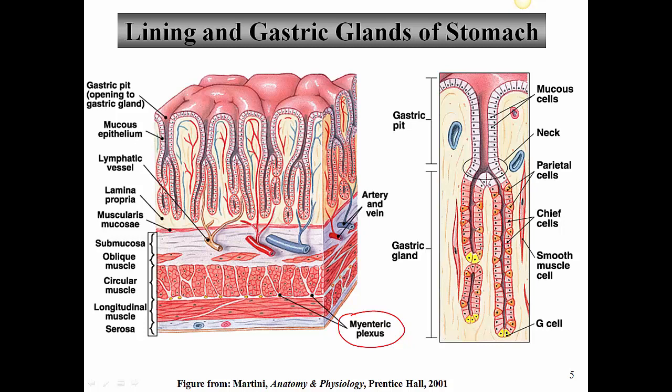The myenteric plexus is the one that controls peristalsis and segmentation. Segmentation is very important in the stomach — that's the grinding action we talked about. You'll notice blood vessels in the submucosal area, as well as some lymphatics. And in the lamina propria, as we talked about before, this is the loose areolar connective tissue just beneath the mucosal epithelium. The mucosal epithelium itself is composed of simple columnar type epithelium, and these are the entrances into the gastric glands or gastric pits.